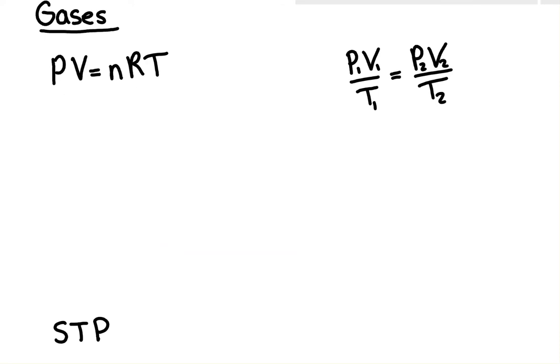We're going to start with PV=nRT, the ideal gas law. P is pressure and it needs to be in atmospheres, so be sure you know the correct units for everything. Volume has to be in liters. N is just moles, number of moles.